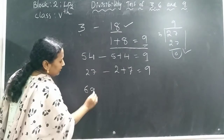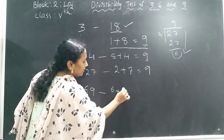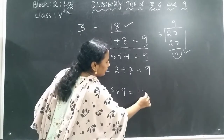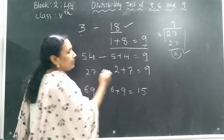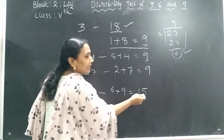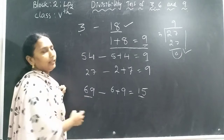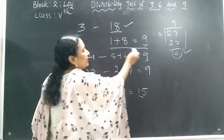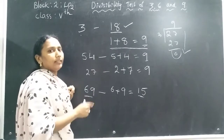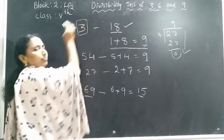Now take the number 69. We add 6 plus 9, which equals 15. Is 15 in the 3 times table? Yes — 3 times 5 is 15. So we can directly say that 69 is divisible by 3. The sum of the digits must be in the table of 3; then that number is divisible by 3.